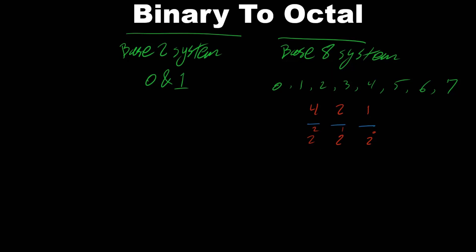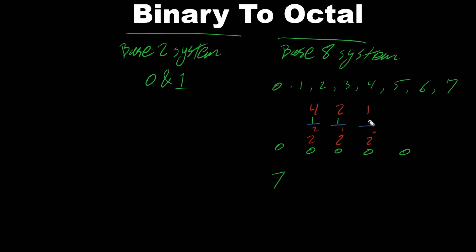In the octal number system we have 0 to 7. To get 0, all bits are off. To get 7, we turn on all of them: 4 plus 2 is 6, plus 1 is 7. So with 3 bits all turned on, we get 7.